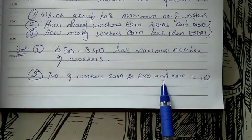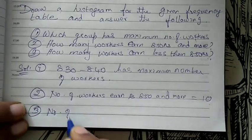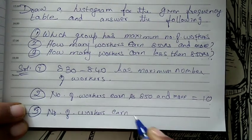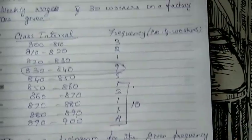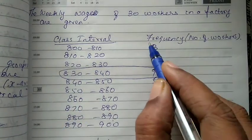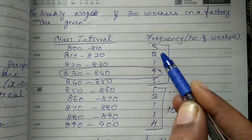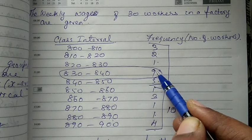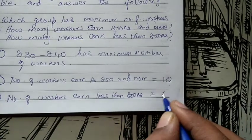So the number of workers earning 850 rupees and more is 10 workers. For workers earning less than 850 rupees, we take from 800 to 810 up to the class before 850: 3 plus 2 plus 1 plus 9 plus 5. Adding up: 3 plus 2 is 5, plus 1 is 6, plus 9 is 15, plus 5 is 20. So 20 people earn less than 850 rupees.